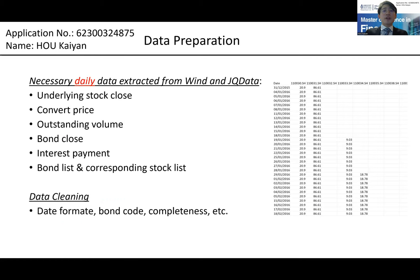Fourth part is data preparation. I need to extract daily data from WIND and JOINCON database and keep them in local files. I adjust their data format to facilitate computation. The picture shows the data format for convert price, like a pivot table.